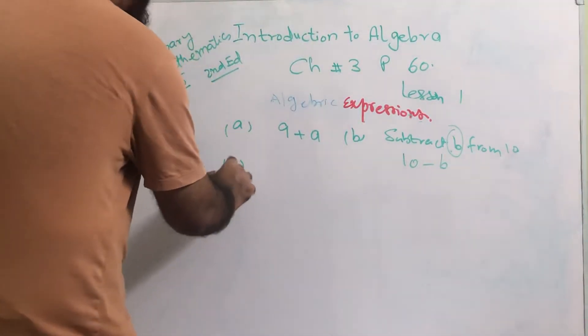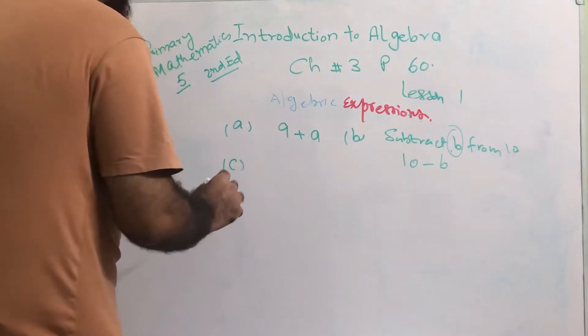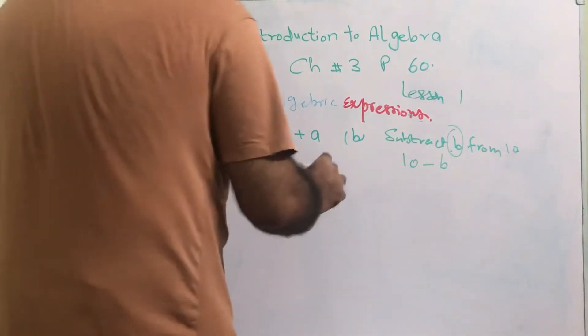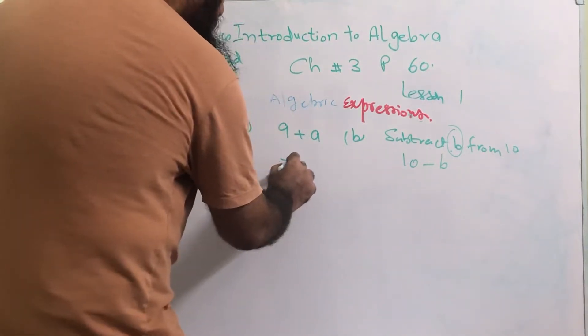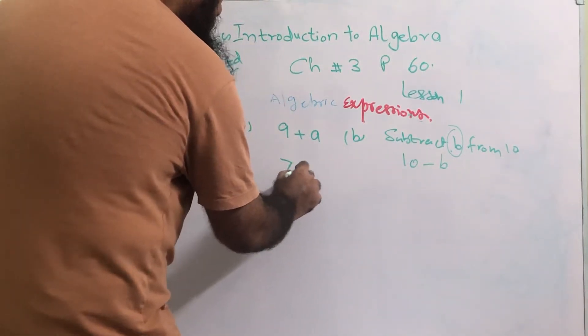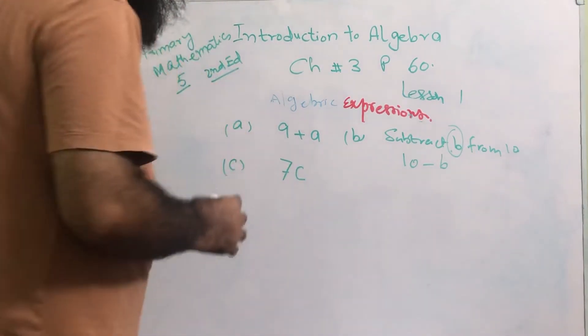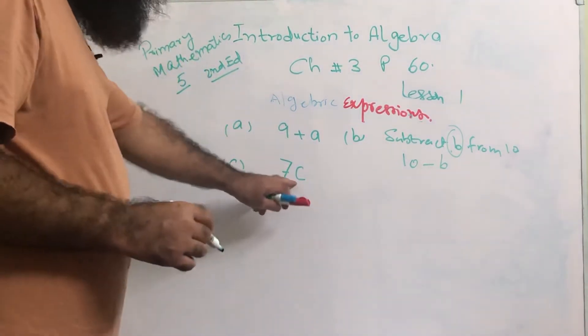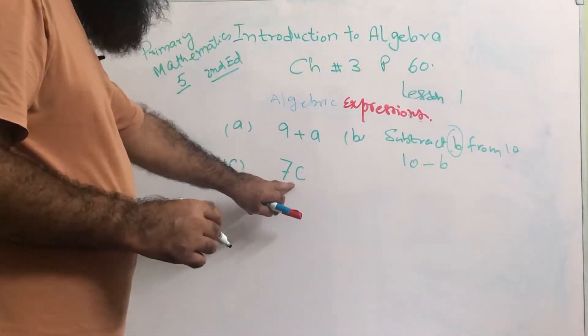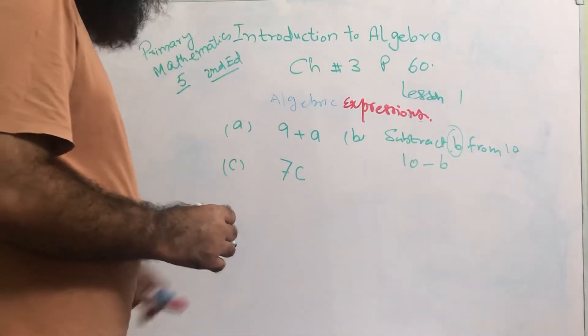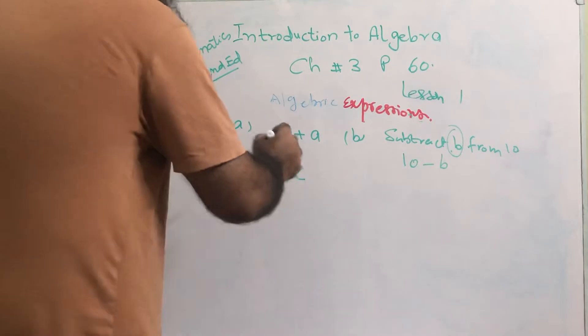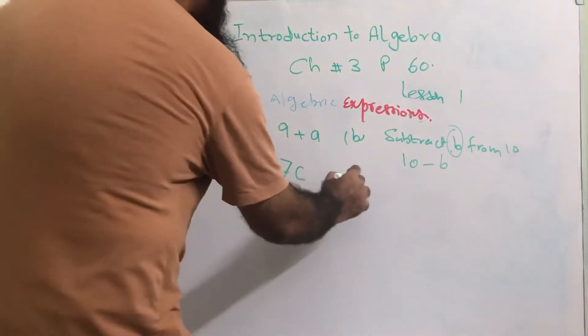Part c: multiply c by 7. So it will be 7c. We know that there is no need to write the multiplication sign in algebraic language or in an algebraic expression.